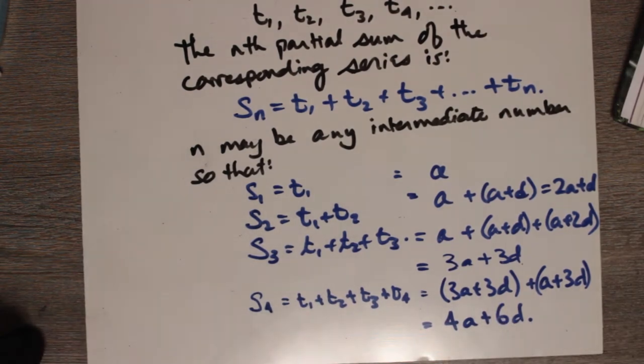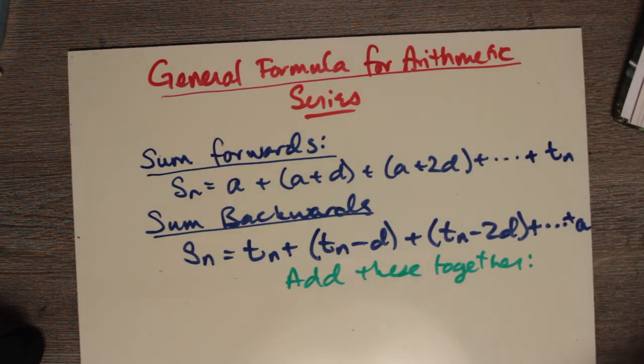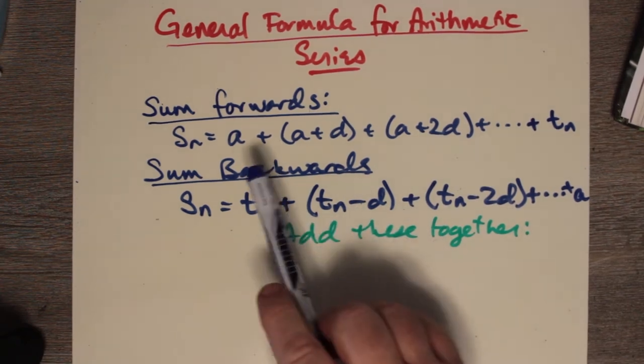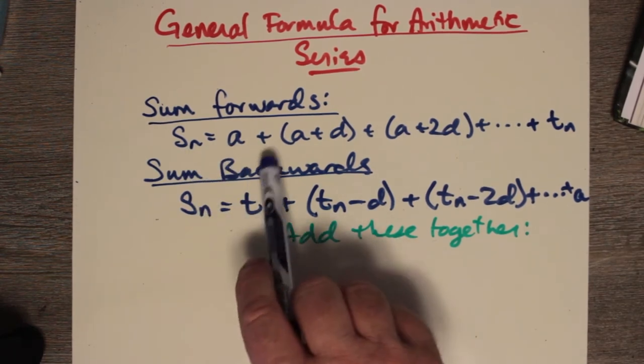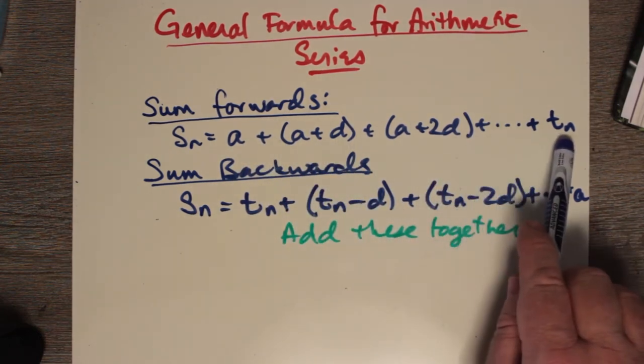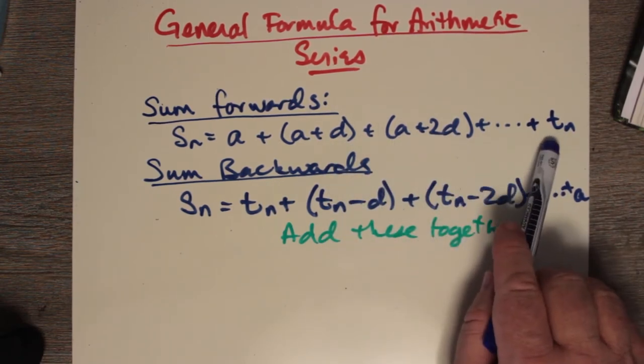The next section has to do with the general form for an arithmetic series. What we're trying to do here is come up with a general formula. Notice that we can express the sum Sn going forwards: t1, t2, t3, and we proceed by adding all the terms up to tn.